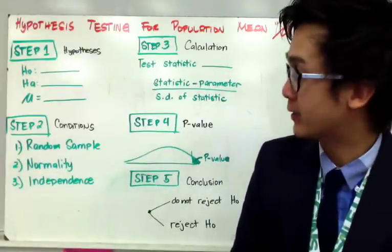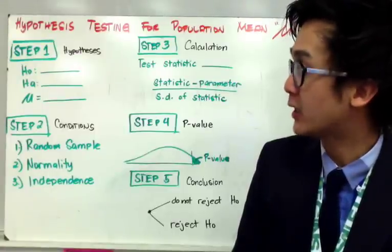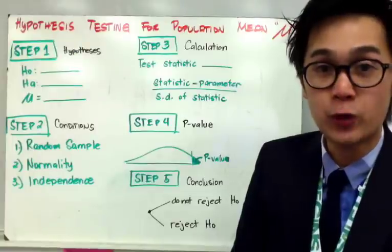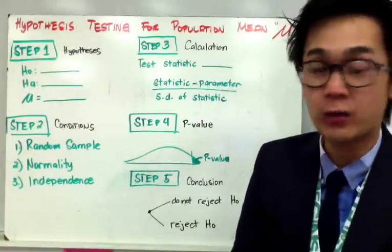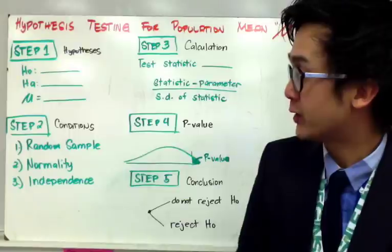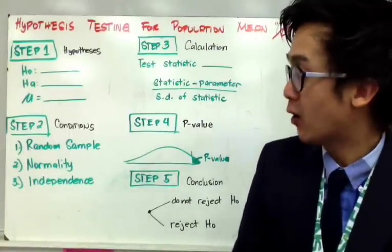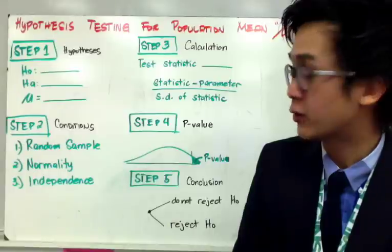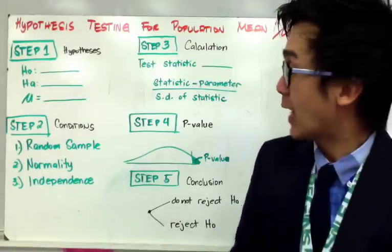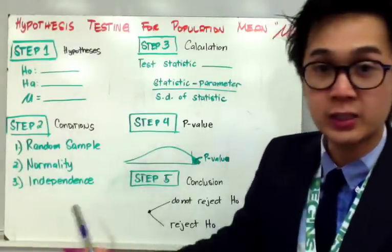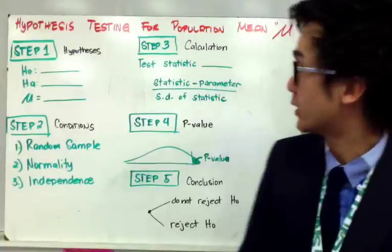The second step is the condition. You need to write out if you have satisfied the conditions for population mean before you proceed to steps three, four, and five without any caution. For the first condition, you need to make sure that the sample is randomly selected, your population is normally distributed, and your sample is also independent. If you have satisfied all three conditions, you can proceed to step three without any caution.